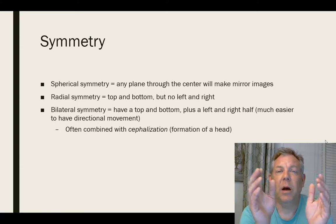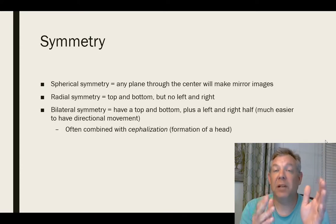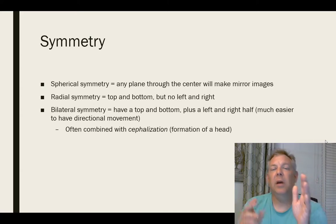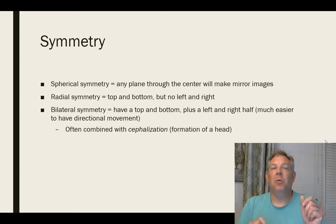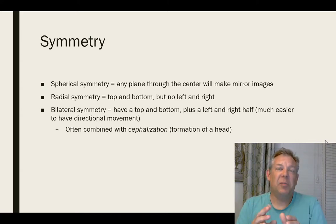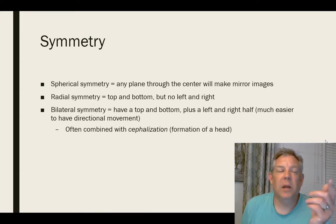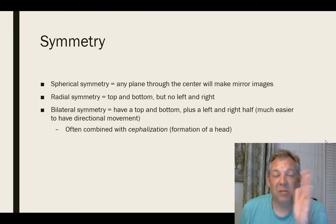Bilateral symmetry is what you are — humans are bilaterally symmetrical. You have a top and a bottom plus a left and a right. When you have bilateral symmetry, this makes it much easier to have directional movement. Organisms with bilateral symmetry can move towards something or move away from something. Consequently, you often see cephalization, or the formation of a head, when organisms have bilateral symmetry.